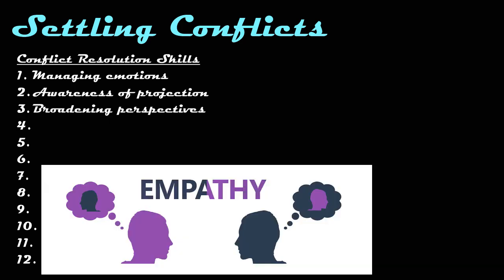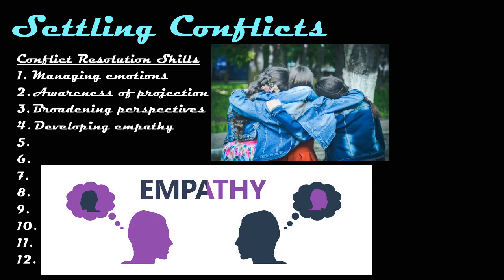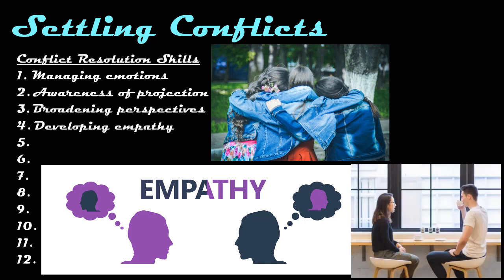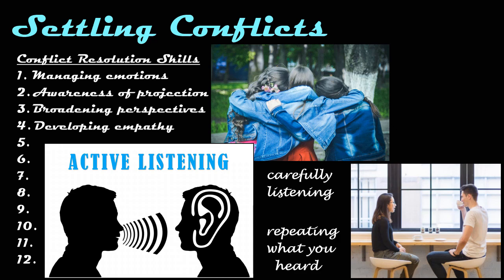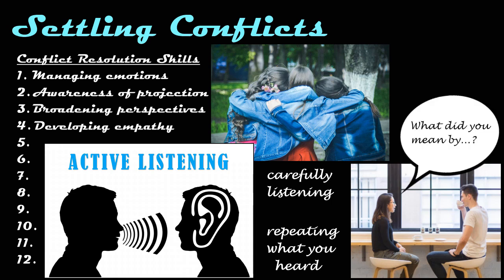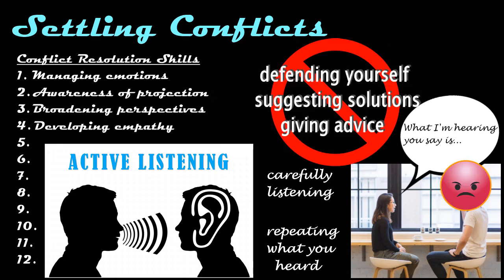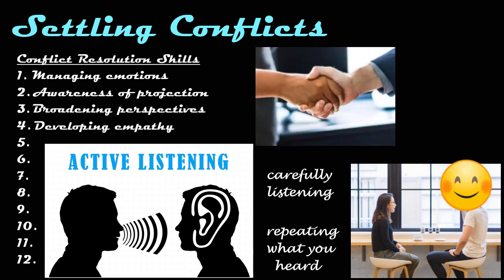Part of broadening your perspective is understanding the feelings and needs of the other person. Developing empathy is a skill that involves building openness and trust with others. The best way to develop empathy with another person is to make sure they feel heard and understood. Active listening is a strategy that involves carefully listening to the other person and trying to verbally reflect their feelings back to them. In order to make sure you're getting it right, you might ask clarifying questions or summarize their viewpoint. Especially if your counterpart is angry, it is important to avoid defending yourself, suggesting solutions, or giving advice right away. By first making sure the other individual feels understood, the tension will diffuse and both parties will be in a position to reason things out together.